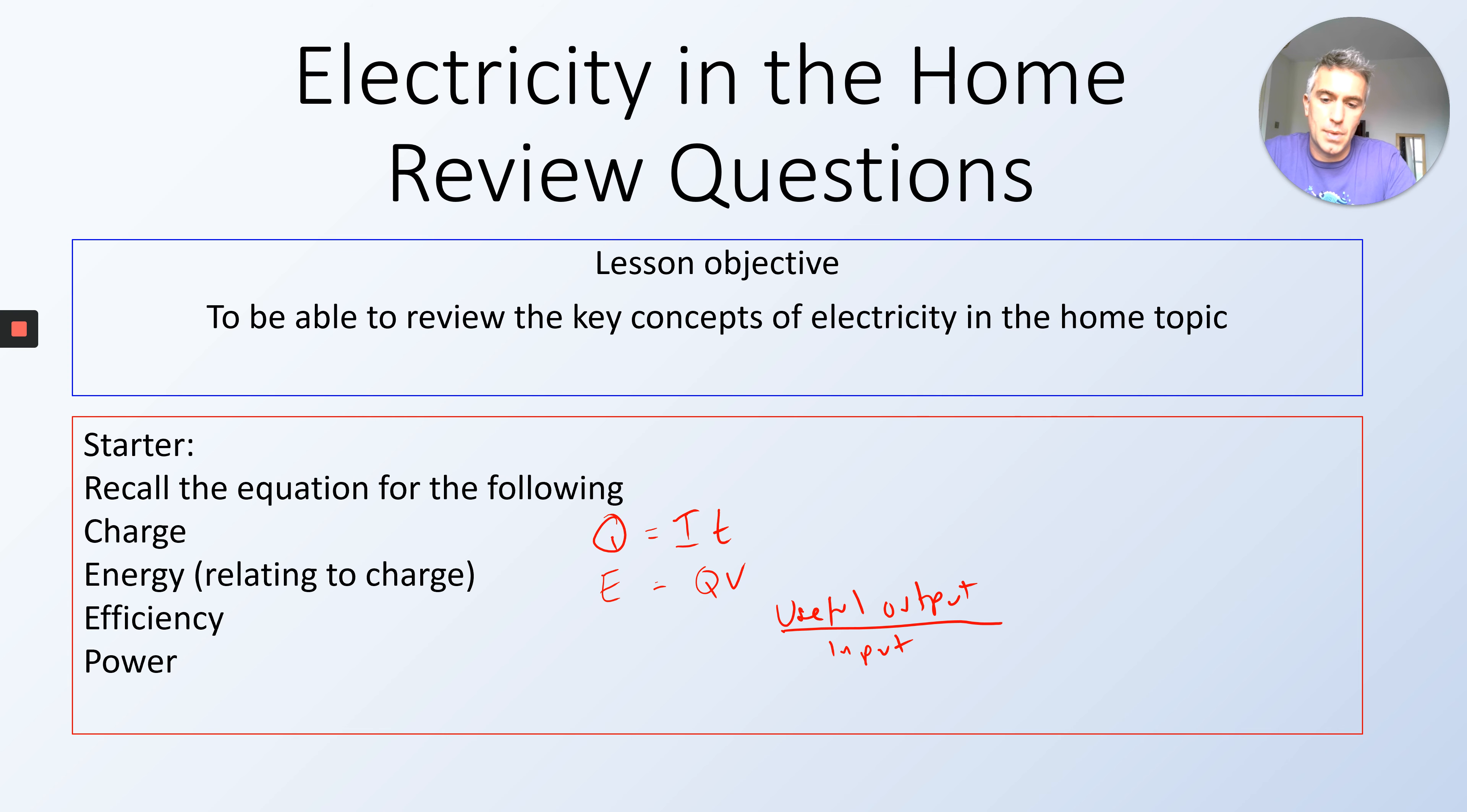So how much you get out divided by how much you put in. If you're not sure and you get it the wrong way around, basically if you've put it the wrong way around, your answer will be above one, which is impossible. You can't have a device that's more than 100% efficient, so then you know you've done it wrong.